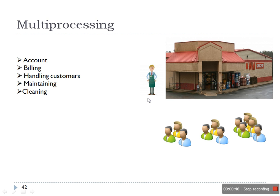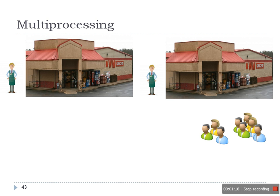At any particular time he can do only one task. For example, some customers came to his shop and bought something — if he's billing and making a bill for those customers, at that time he cannot serve another person. As the number of customers increases, he's not able to handle all of them. One solution might be to open a new shop and hire one more person, but this is not feasible because it requires investment.